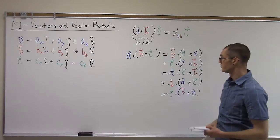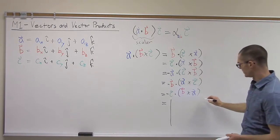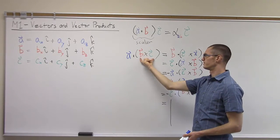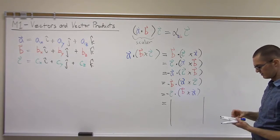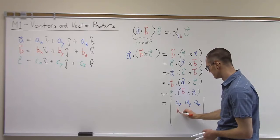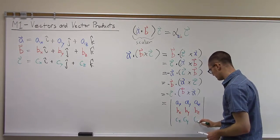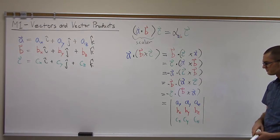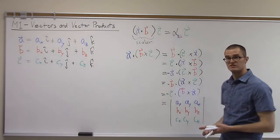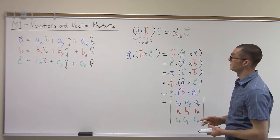Going back to our definition based on determinants, this scalar result can be calculated by putting the first vector in the first row of the determinant, the second vector in the second row, and the third vector in the third row — so a across the top, b in the middle, and c on the bottom. If you recall properties of determinants, switching the order of any two rows flips the sign of the determinant, which explains these sign-change relationships. That's the second type of vector triple product.